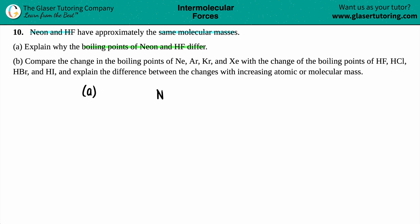We have neon and we have HF. Neon is just a single atom — it is itself a molecule. If we write out its valence electrons, neon has a total of eight valence electrons because it's a noble gas. It has the full octet, so everything is complete.